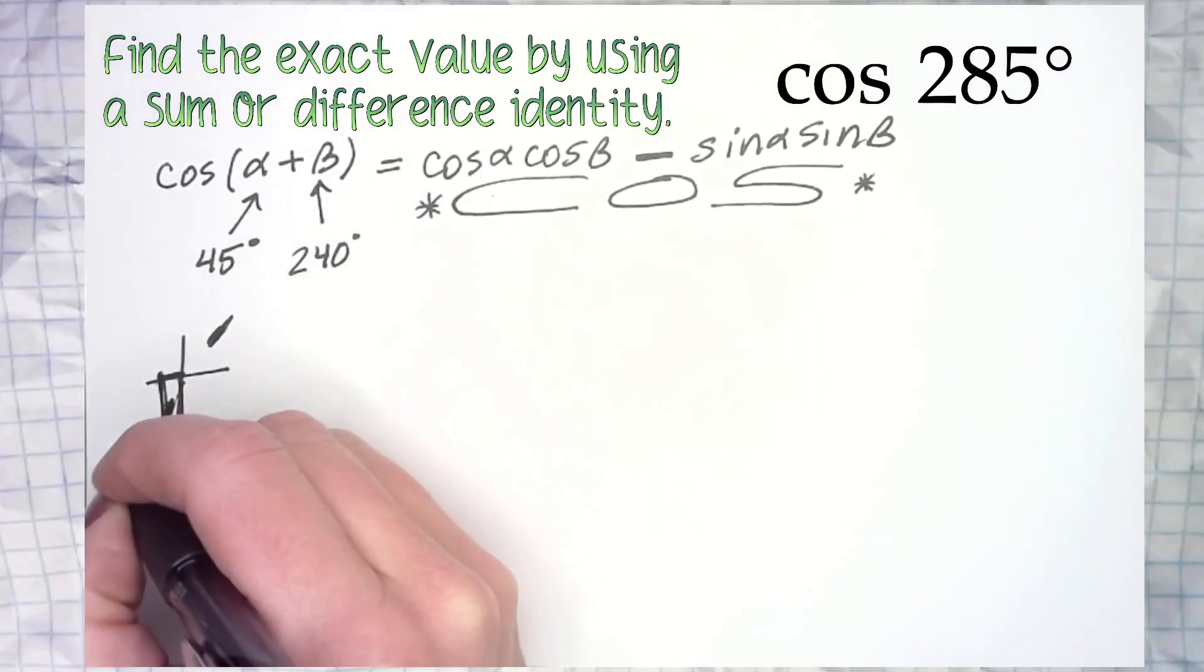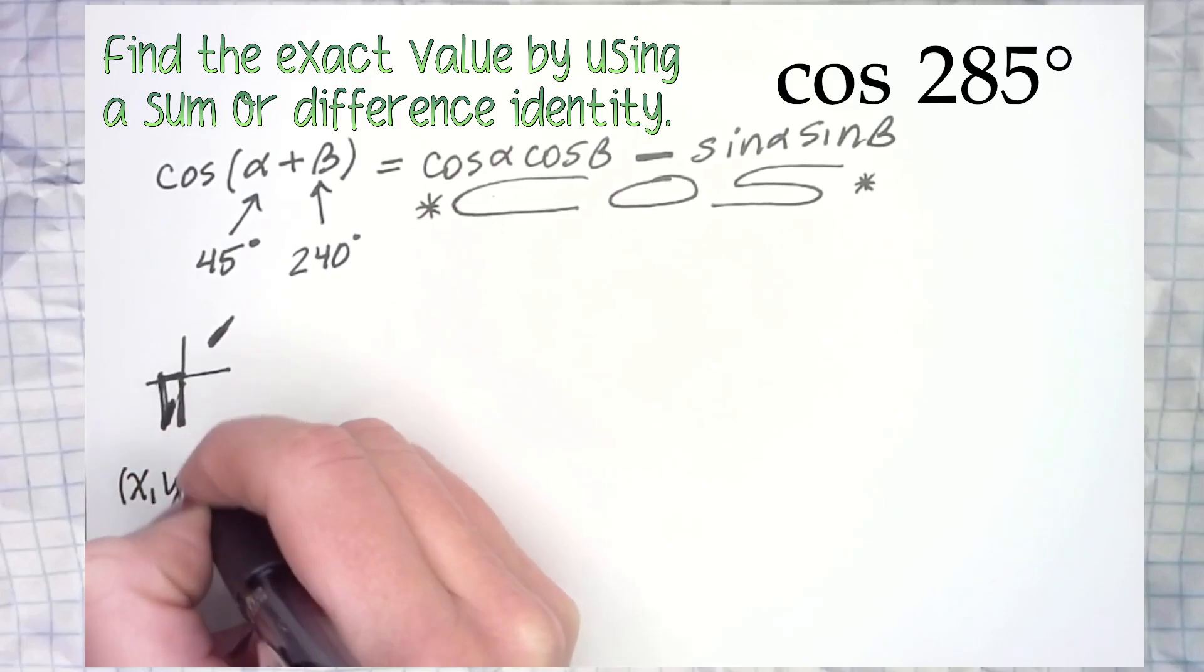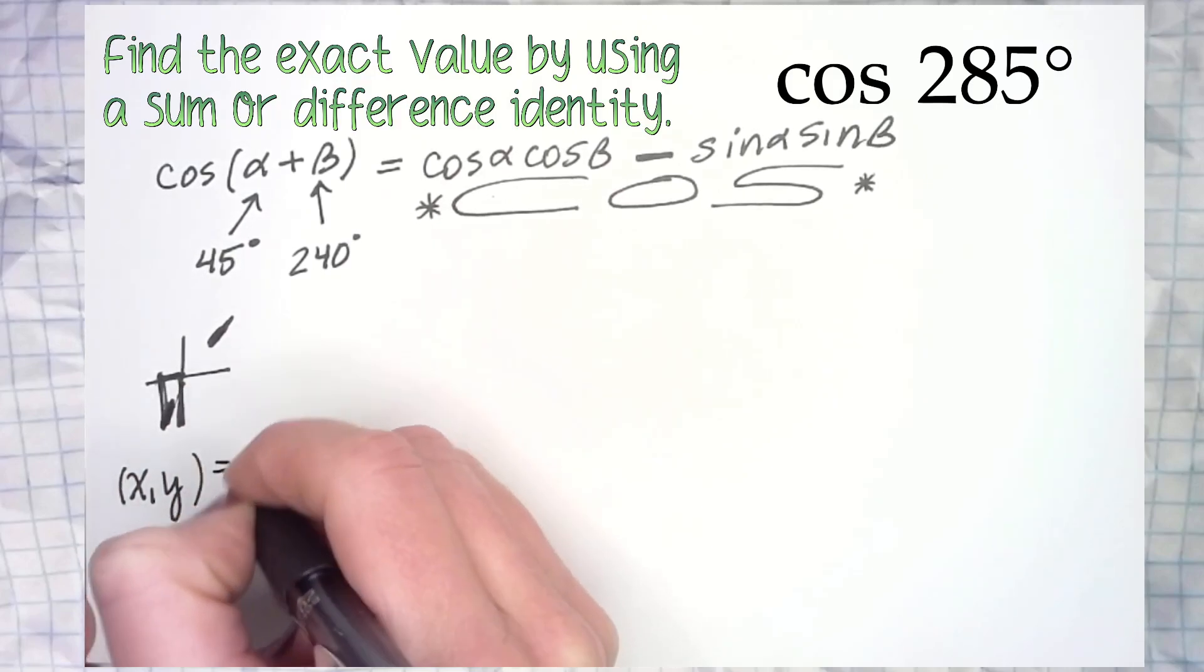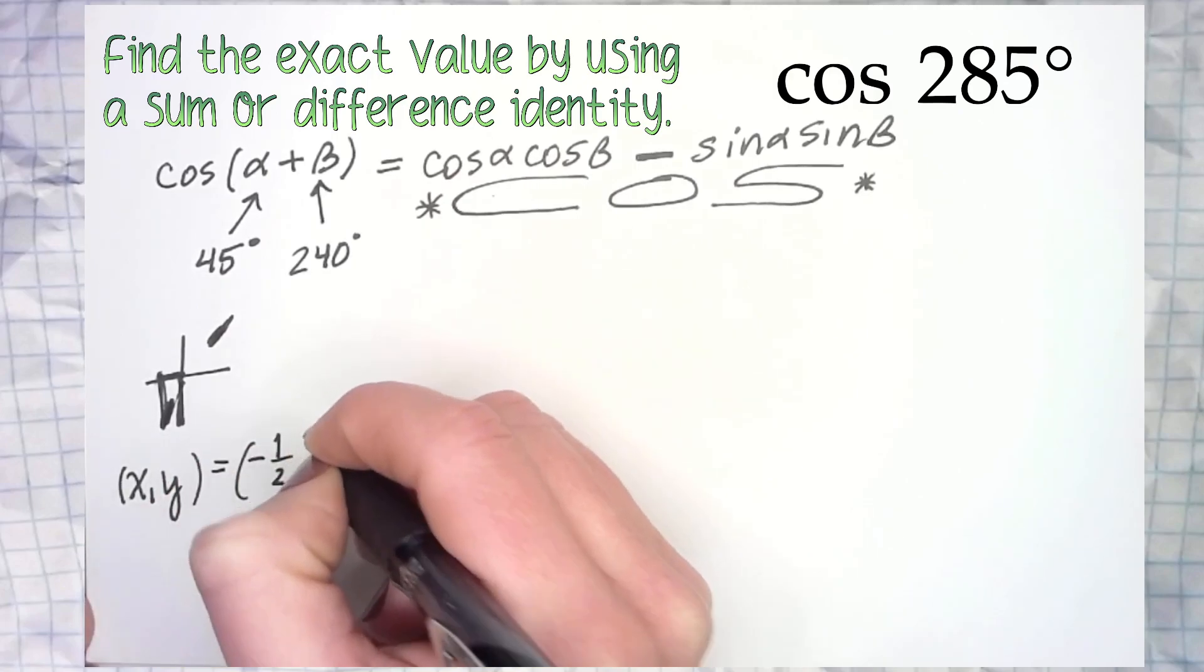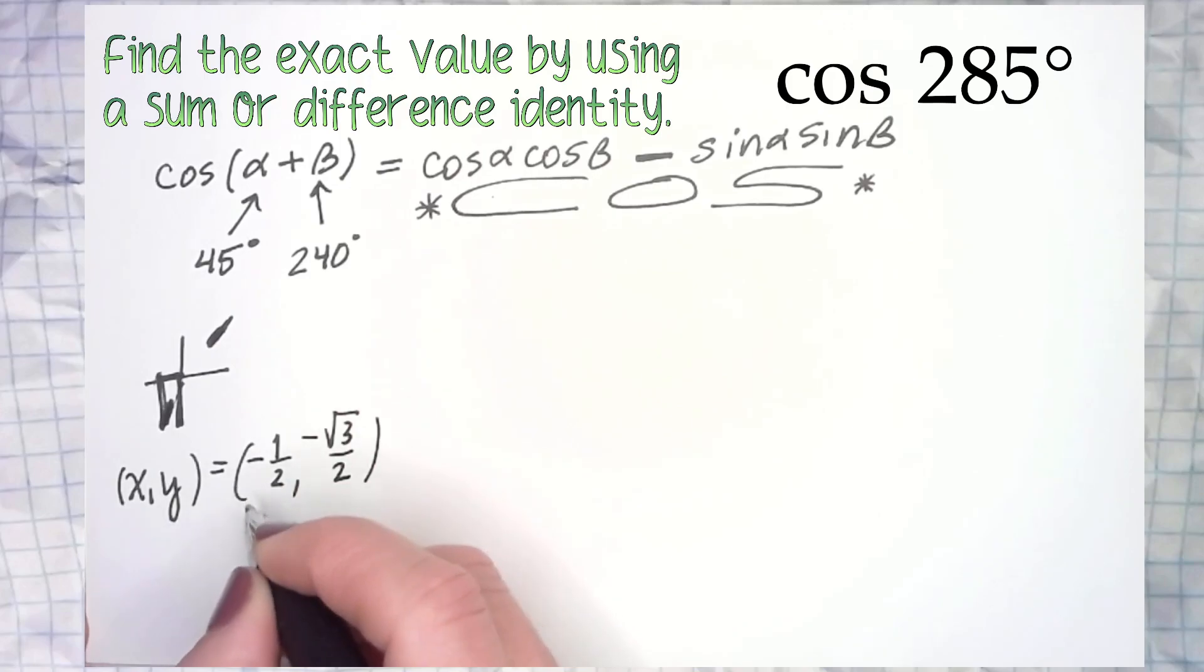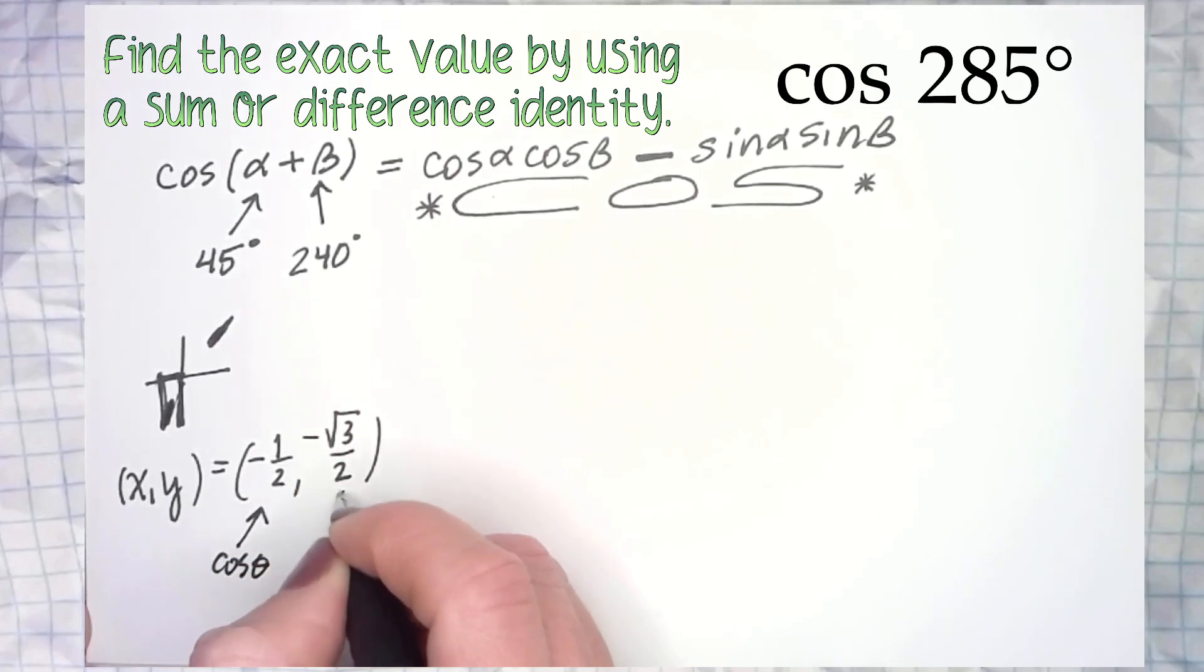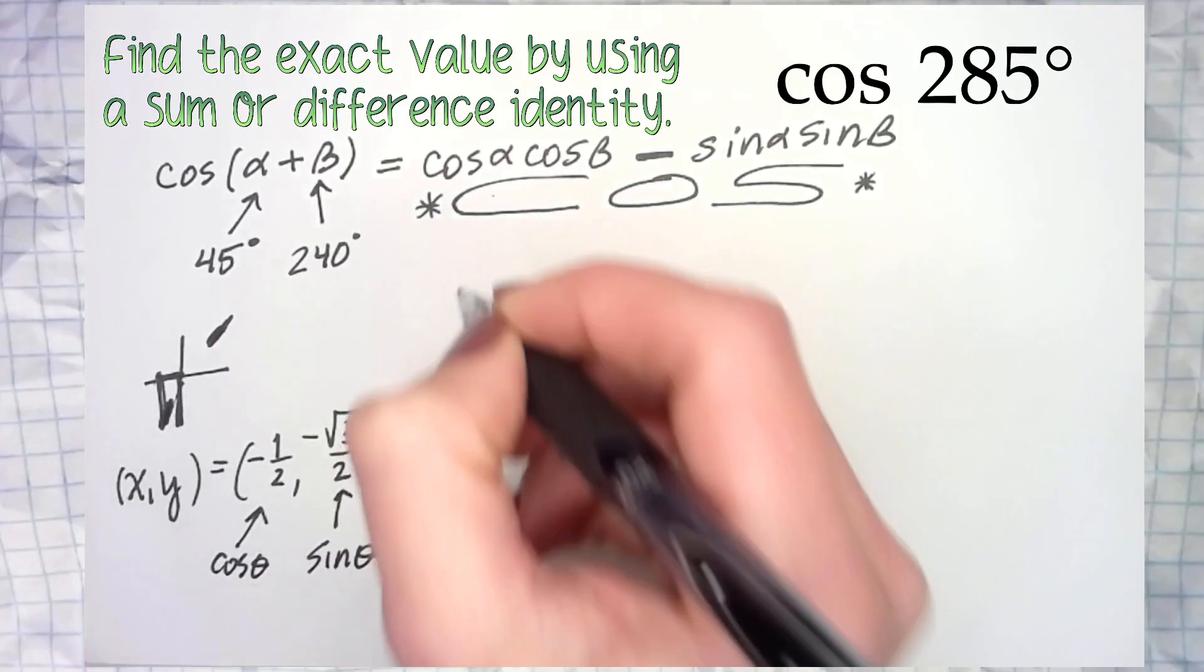That means you go left a little bit, but then you go down quite a bit. And if you want to think of your x-y ordered pair, if your x is left a little bit and your y is down a lot, that's your x, that's your y. In other words, that is your cosine and that is your sine.